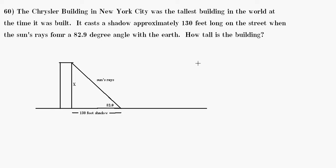So we would start off by writing that the tangent of 82.9 degrees is equal to opposite, which in this case is our unknown x, over the adjacent which is 130 feet.